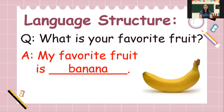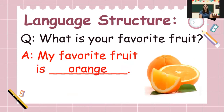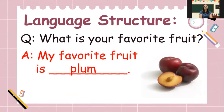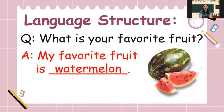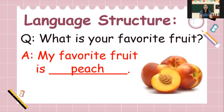Question: What is your favorite fruit? Answer: My favorite fruit is banana. Next. Question: What is your favorite fruit? Answer: My favorite fruit is orange. Next. Question: What is your favorite fruit? Answer: My favorite fruit is plum. Question: What is your favorite fruit? Answer: My favorite fruit is watermelon. Question: What is your favorite fruit? Answer: My favorite fruit is peach.